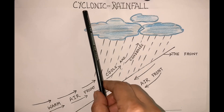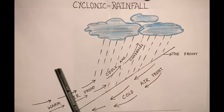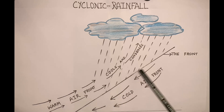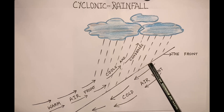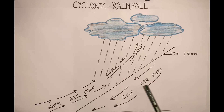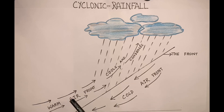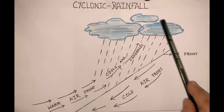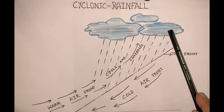The third type of rainfall is cyclonic rainfall, also known as frontal rainfall. The front is the line where warm air meets cold air. When warm air meets cold air, the warm air, being lighter, is forced above the cold air. As it rises up, it cools and condenses to form clouds.